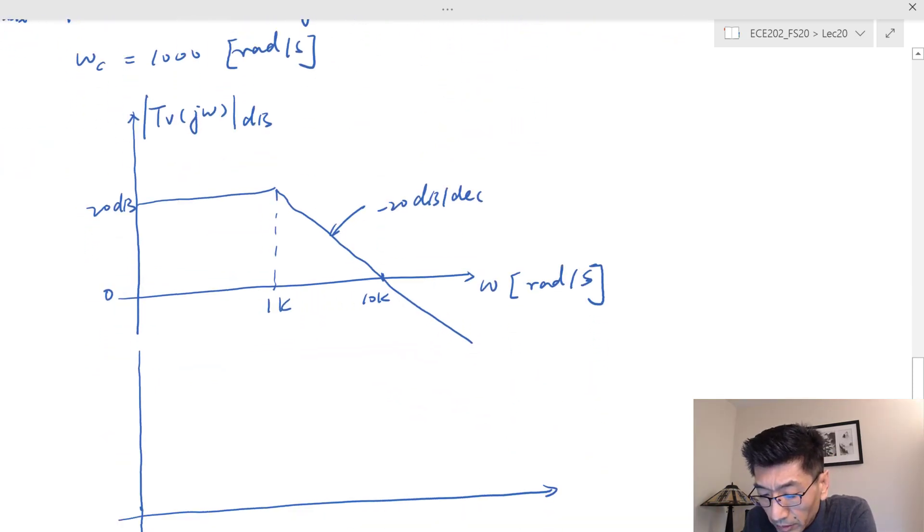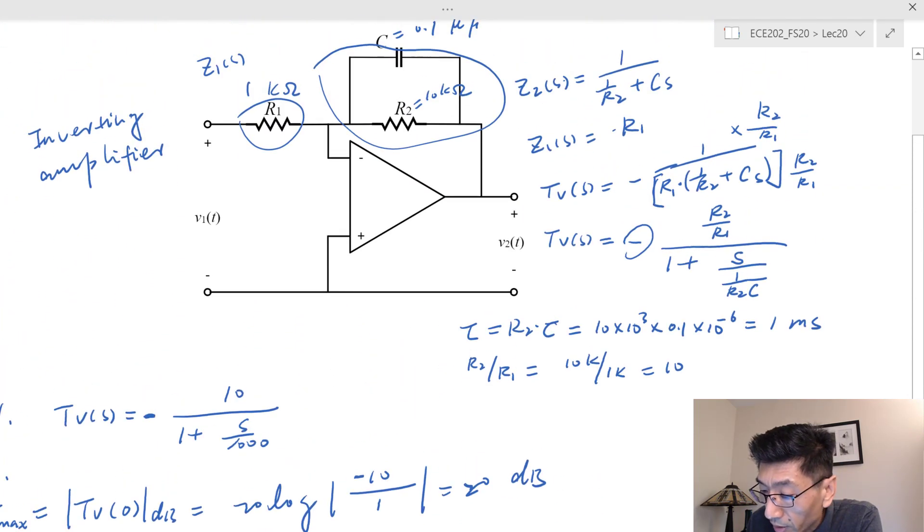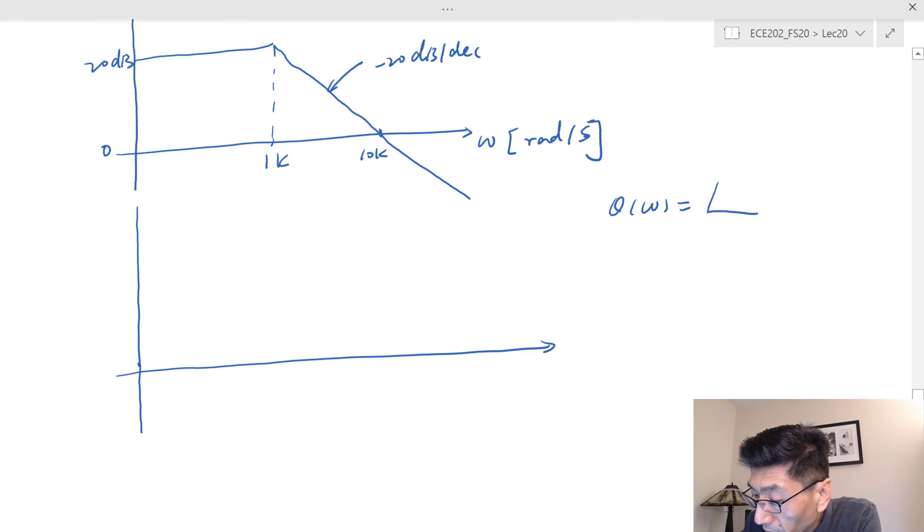You can start with 180 or negative 180, but normally we want the phase plot to stay between plus 180 and negative 180 if possible. In that case we'll start with 180 because the phase angle is going to drop. The phase angle should equal the angle of negative 10 minus the angle of the numerator, which is arctan(ω/1000). Therefore there will be a transition period or transition interval of two decades.